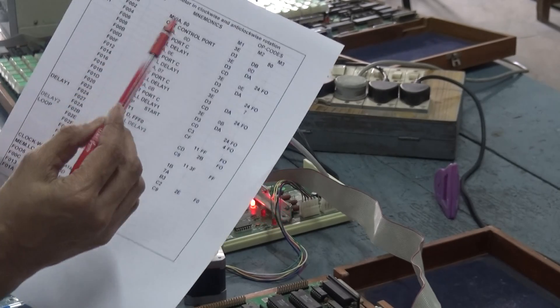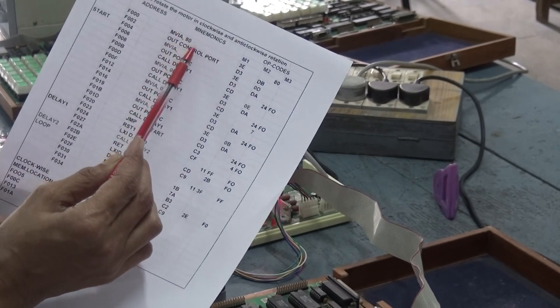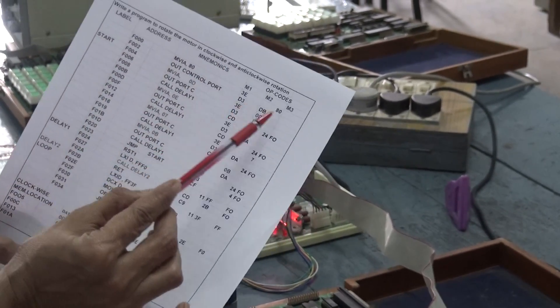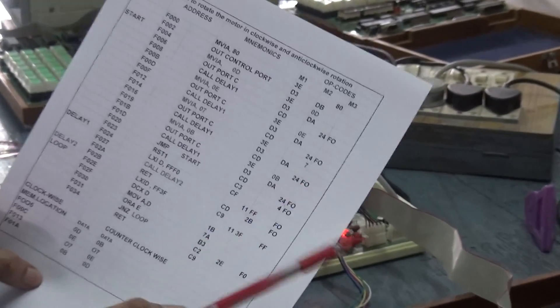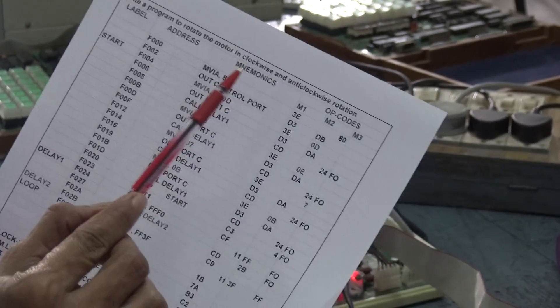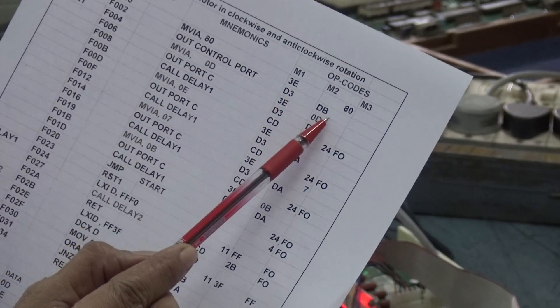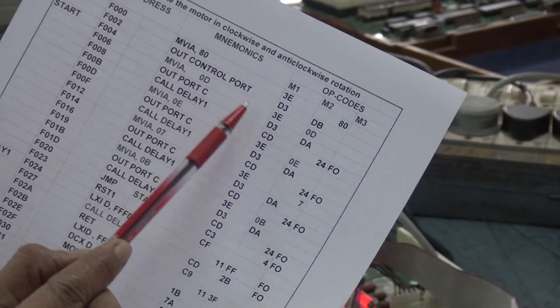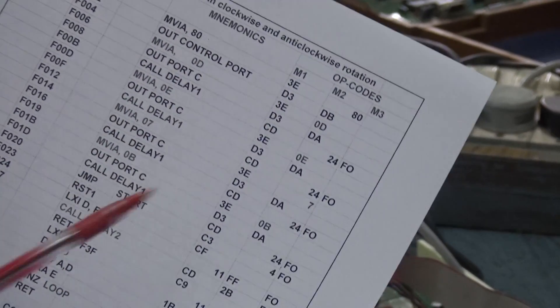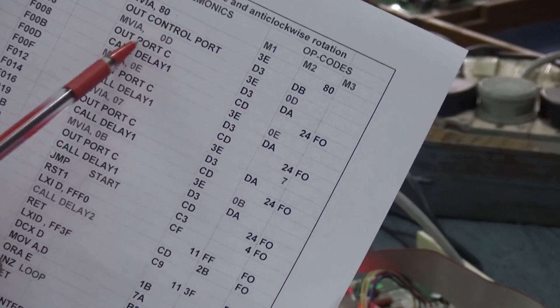Now, what is this program that we are writing here? Once again, 80 is a control word to make it as an I/O mode, not as a BSR mode. For a BSR mode, it would be 0. And that you are sending it into control port. Then, move immediate A, first data, 0D is coming here. And you are using port C.